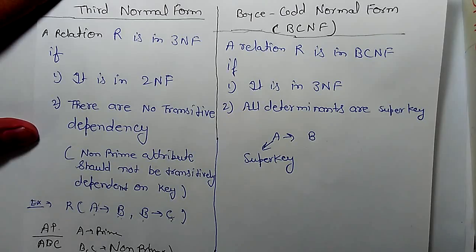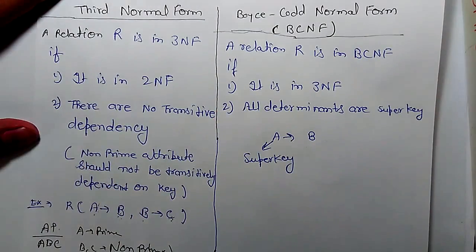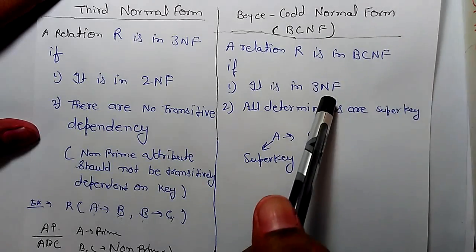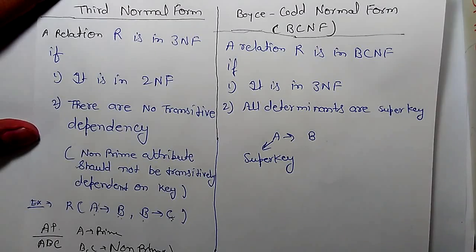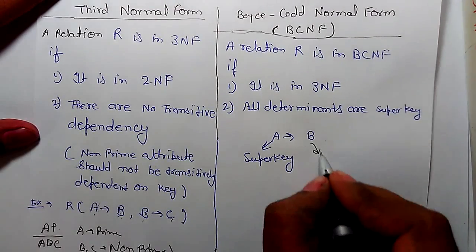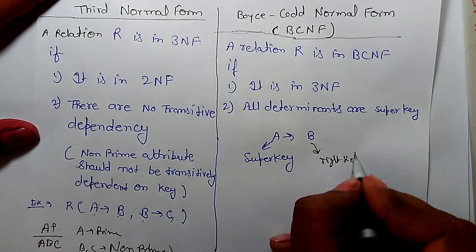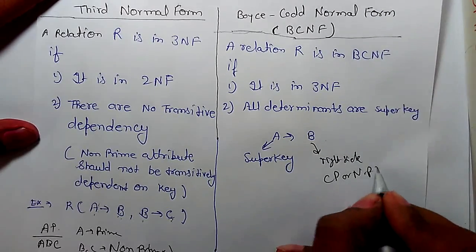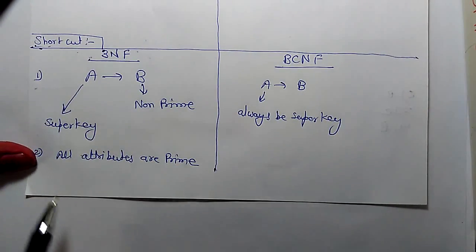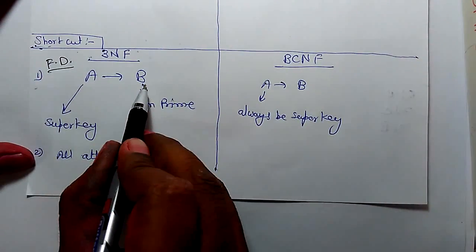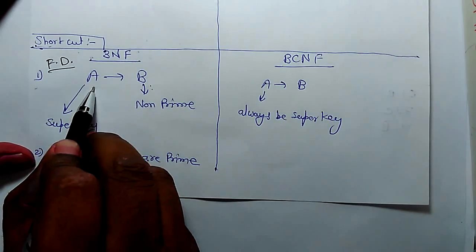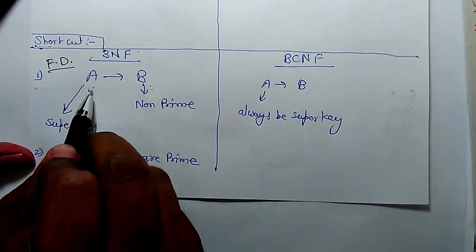Now what is Boyce code normal form? It is extension of 3NF. So our relation should be in 3NF as well as the left side should always be a super key. This is the definition of Boyce code normal form. It doesn't matter what is in right side, it be prime or non-prime, but left side should be a super key. In any functional dependency if right hand side is a non-prime, the left hand side should be a super key. This is the rule of 3NF.